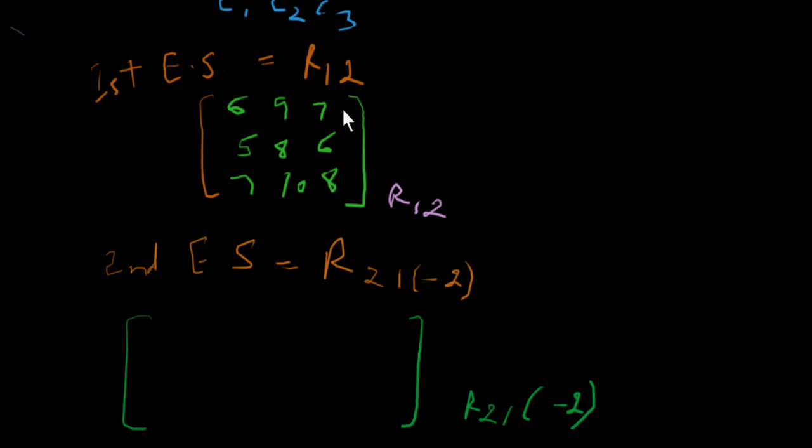First of all, I multiply this row with minus 2: 6 into minus 2, 9 into minus 2, and 7 into minus 2. Then I will add the second row: 5, 8, and 6.